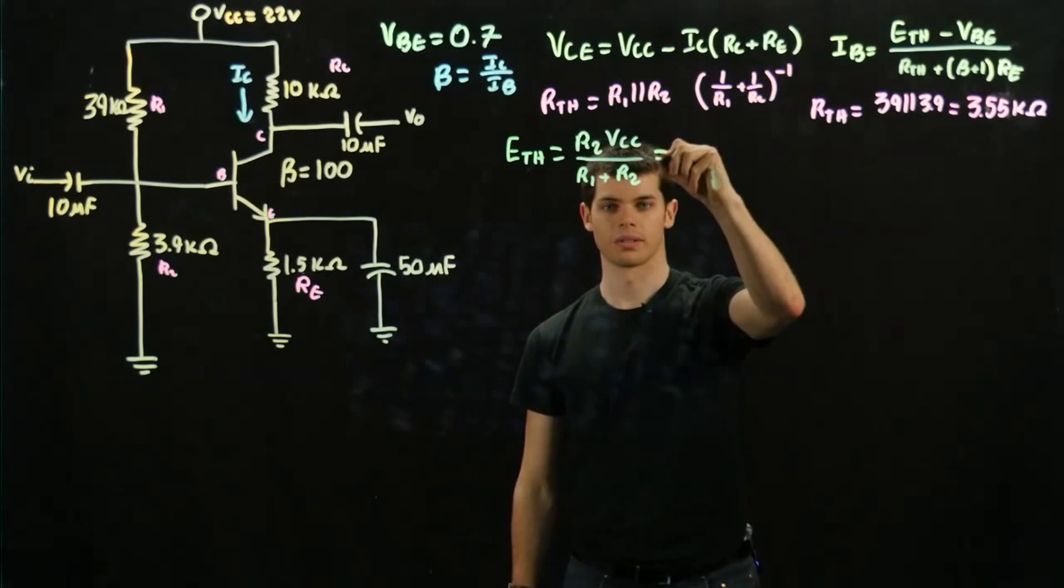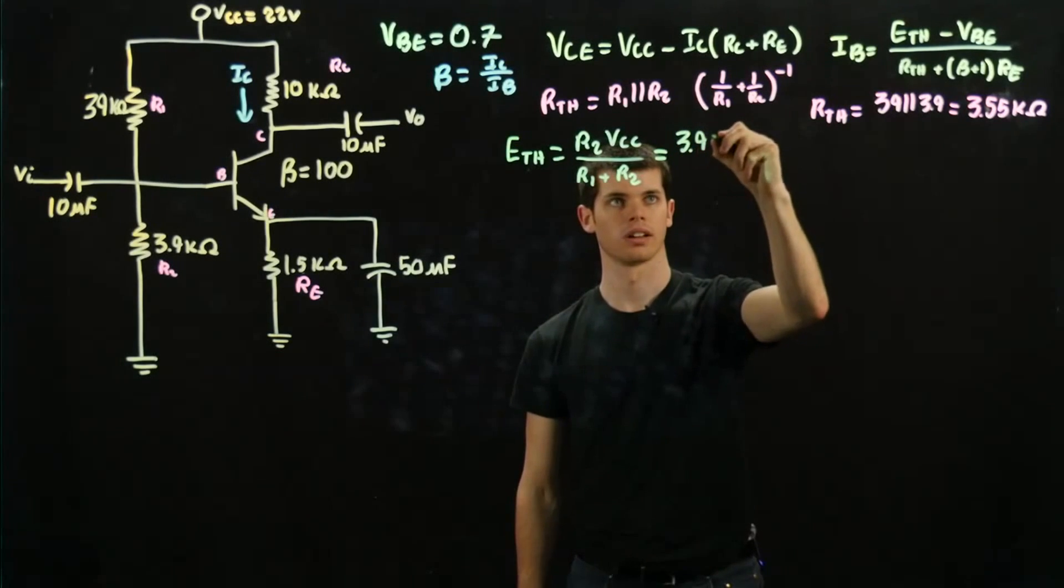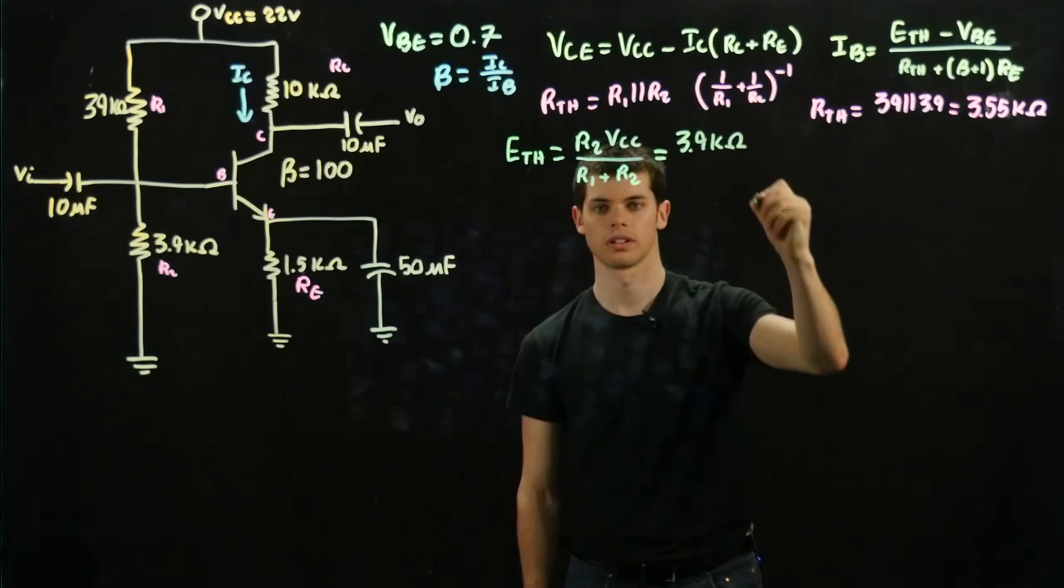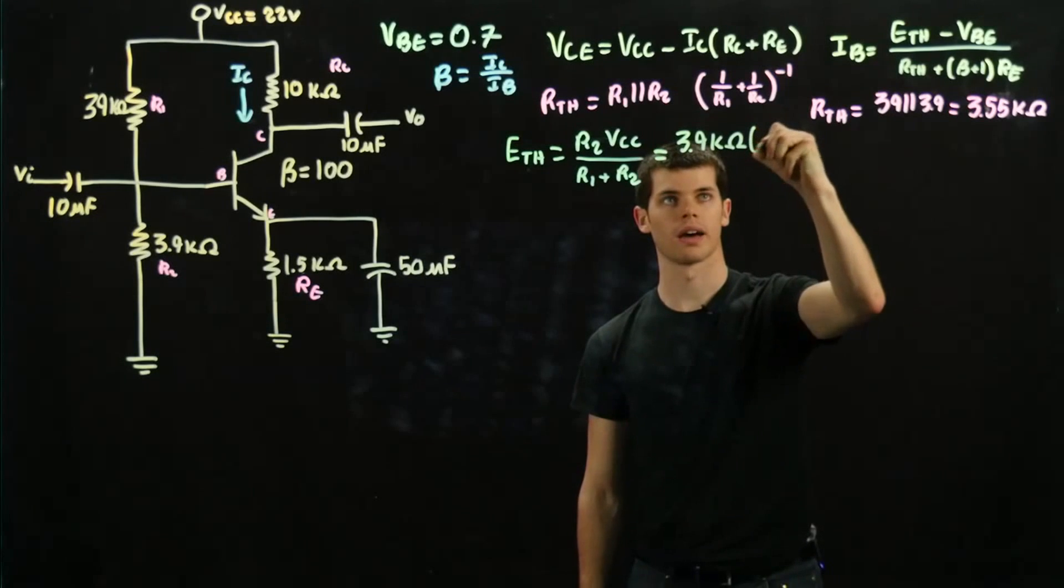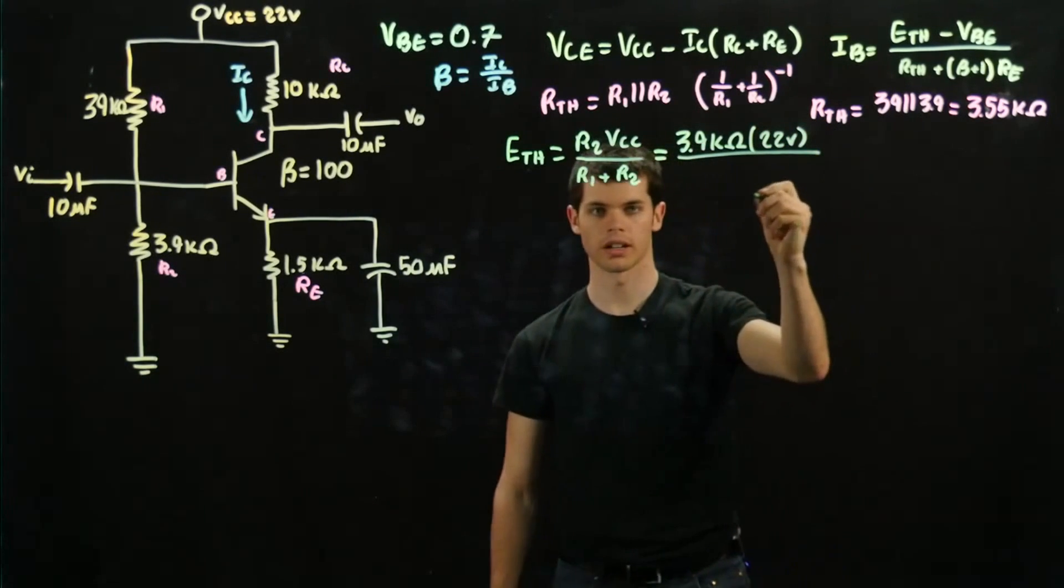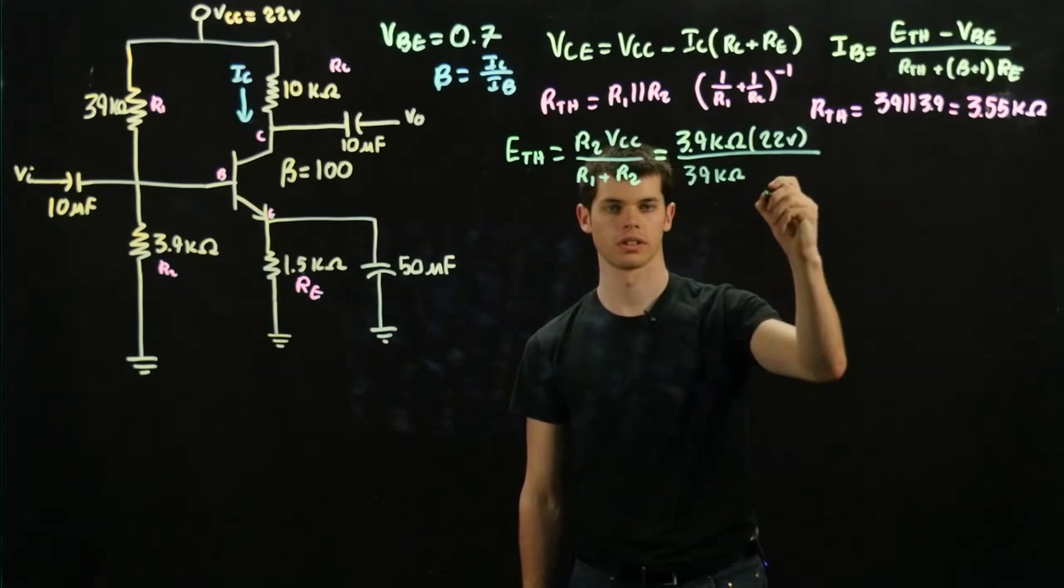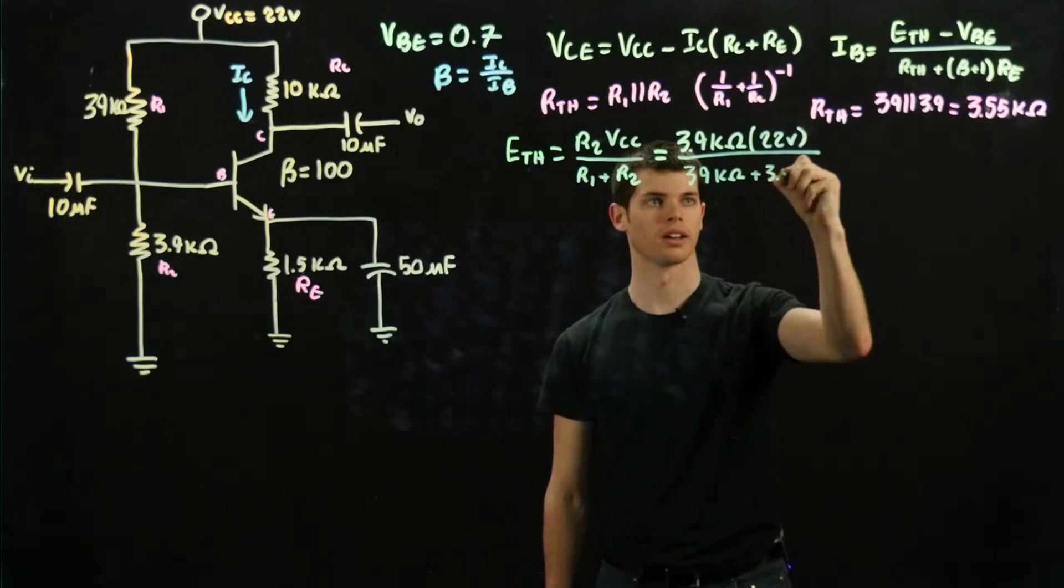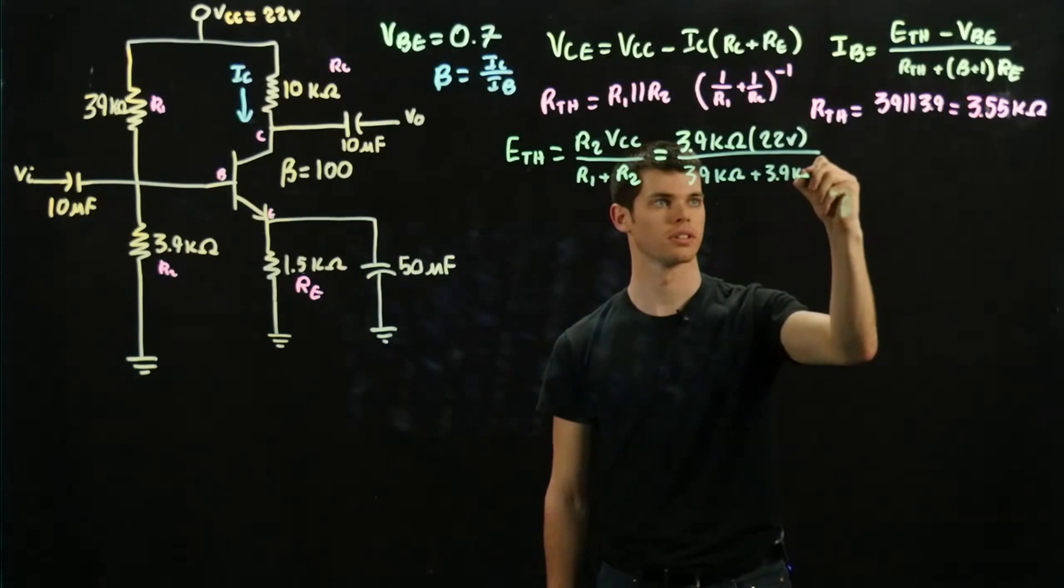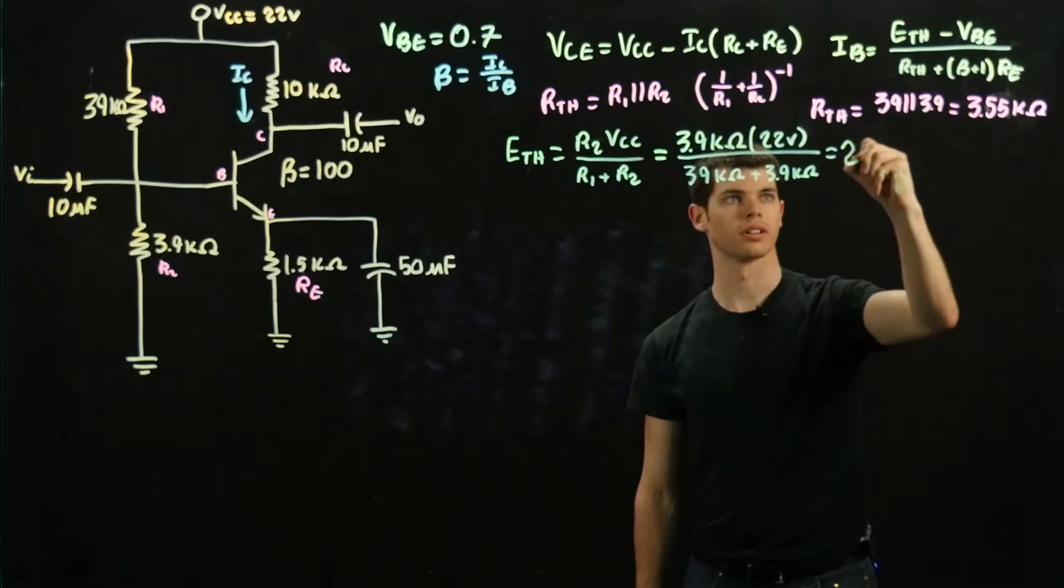Alright, so now for this one we're going to want to solve it out. We're going to get 3.9 kilo-ohms multiply that by 22 volts divided by 39 kilo-ohms plus 3.9 kilo-ohms. And this is going to be equal to 2 volts.